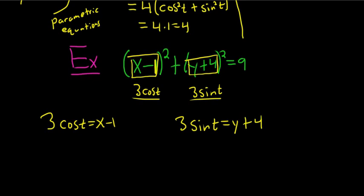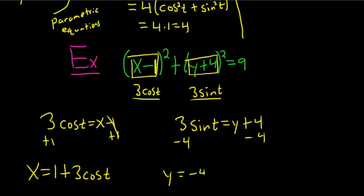So solving for x on the left-hand side we would add 1 to both sides so plus 1 plus 1, we would get x equals 1 plus 3 cosine t. Then subtracting 4 from both sides over here we would get y equals minus 4 plus 3 sine t.